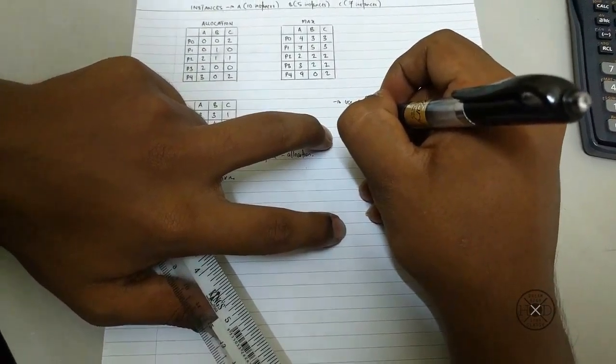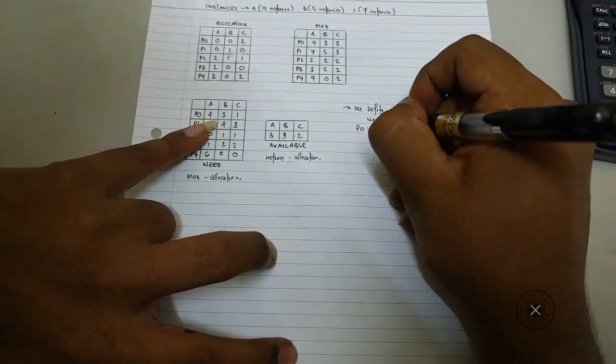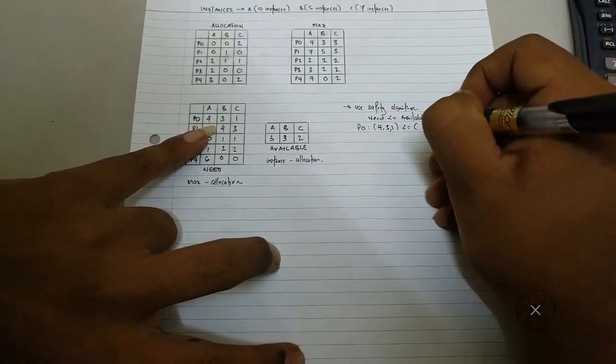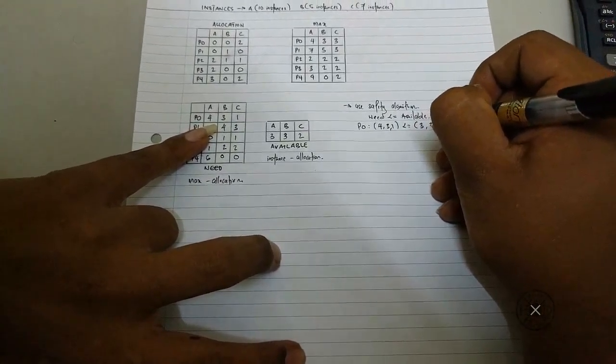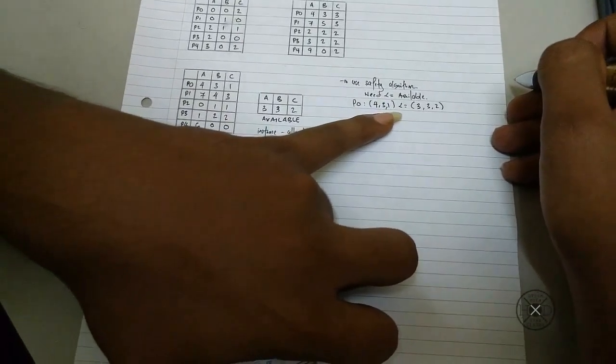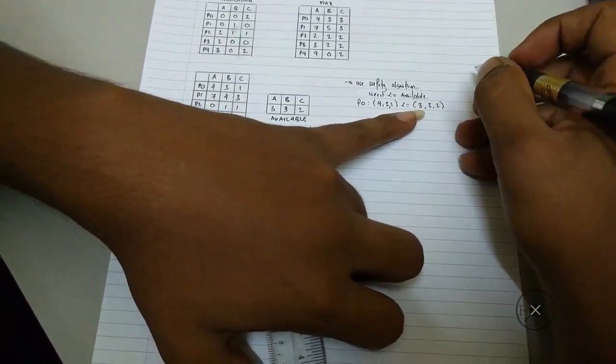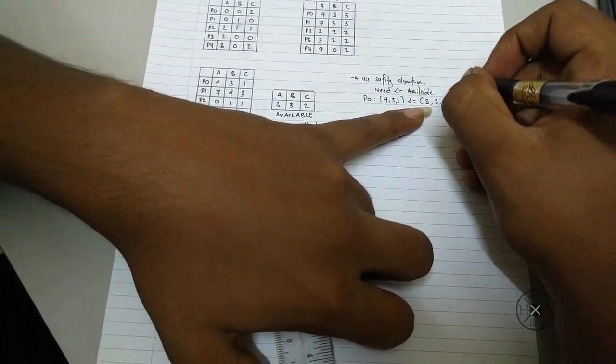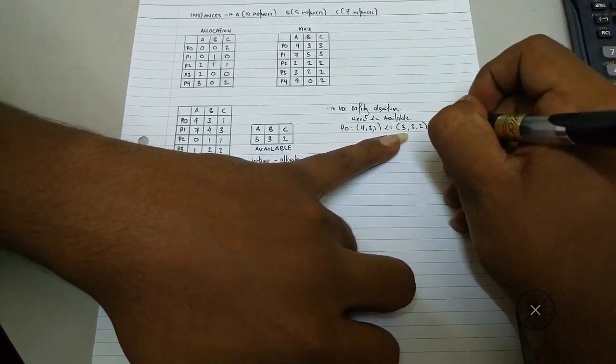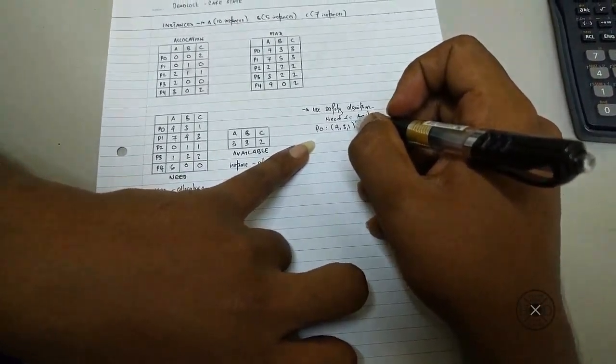So now you start with process 0. For process 0 is 4, 3, 1 less than equal with the available 3, 3, 2. As you see the need is larger than the available table, so it is false.